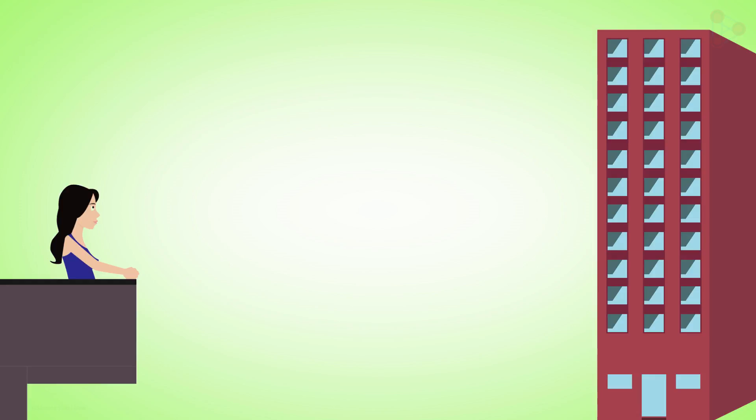When she looks at top of the building, the line of sight is this one. And when she is looking at the bottom of the building, the line of sight is this one. And this is the horizontal line.